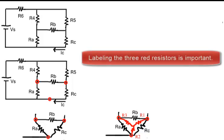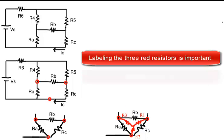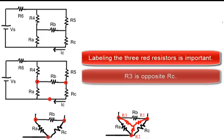Labeling the three red resistors is important. R1 is opposite RA, R2 is opposite RB, R3 is opposite RC.